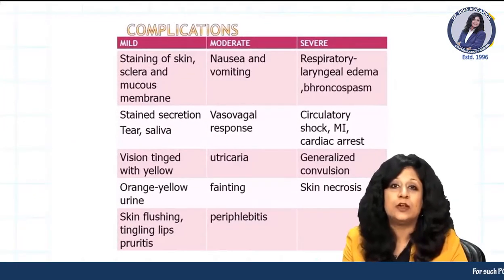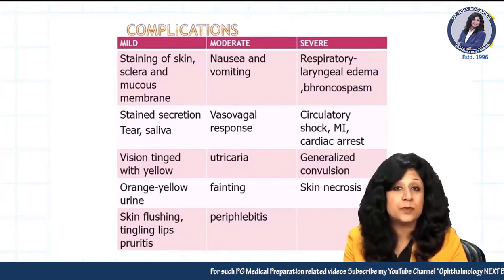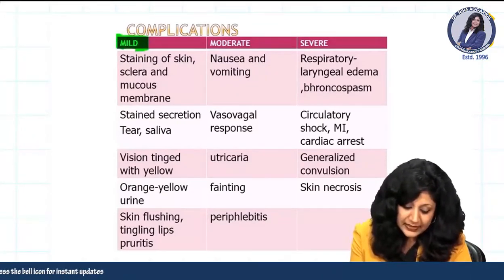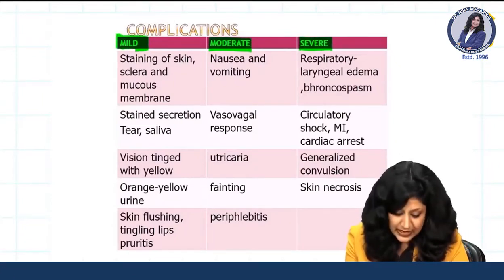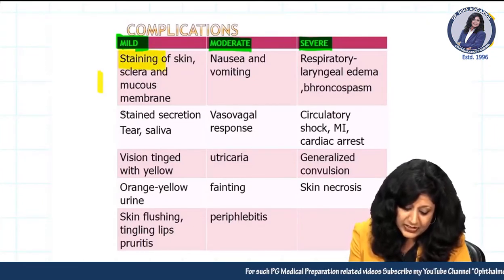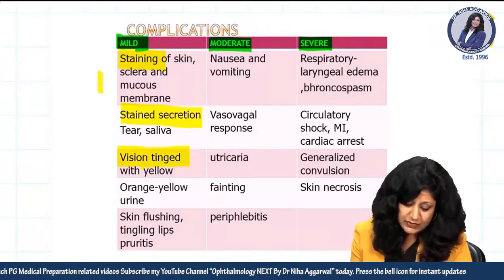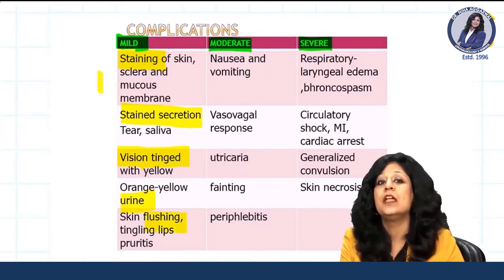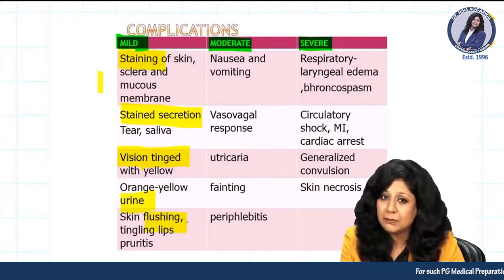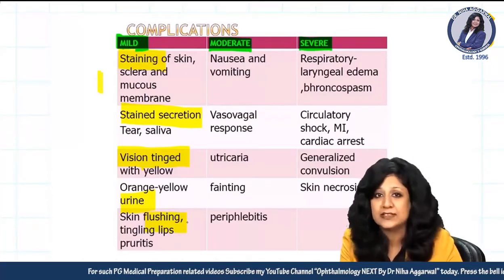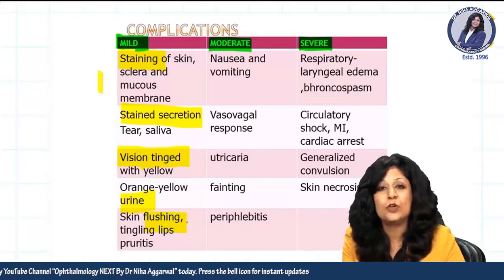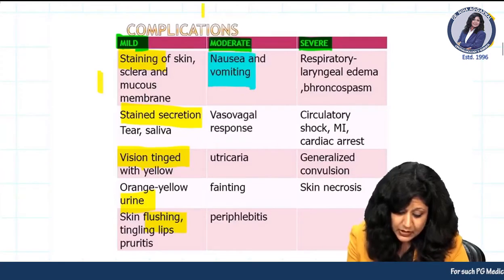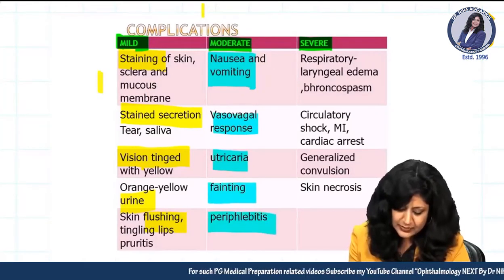Complications should be well known before doing any procedure so you are prepared to deal with emergencies. These are divided into three categories: mild, moderate, and severe. Mild complications are mostly color changes: staining of the skin, sclera, mucous membranes, and secretions; yellow-tinged vision; yellow urine; and flushing. Moderate complications are more allergic in nature: nausea, vomiting, vasovagal response, urticaria, fainting episodes, and sometimes periplebitis.